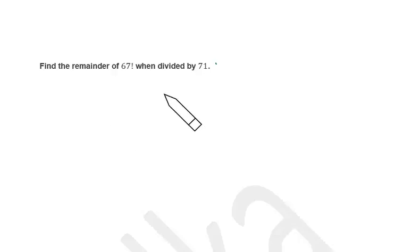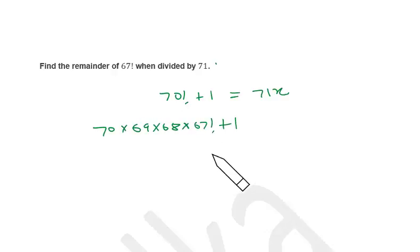So 71 is a prime number. So 70 factorial plus 1 is a multiple of 71. So it is 71x. I wish to have 67 factorial. So 70 into 69 into 68 into 67 factorial plus 1, that is also a multiple of 71. I reduce it further. It is minus 1, minus 2, and minus 3. So it is minus 6. So minus 6 into 67 factorial plus 1, still it is a multiple of 71.